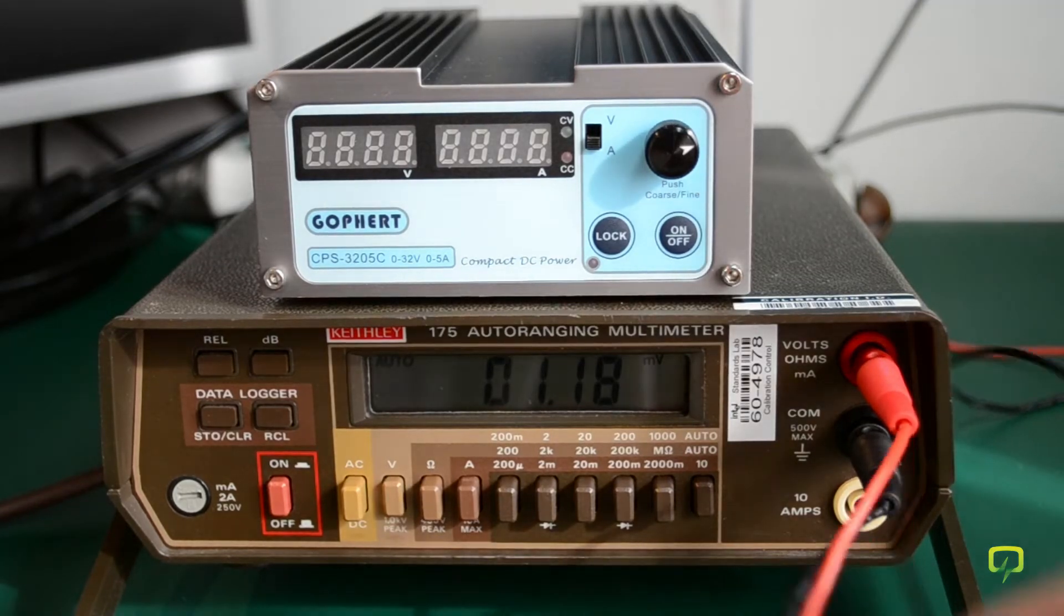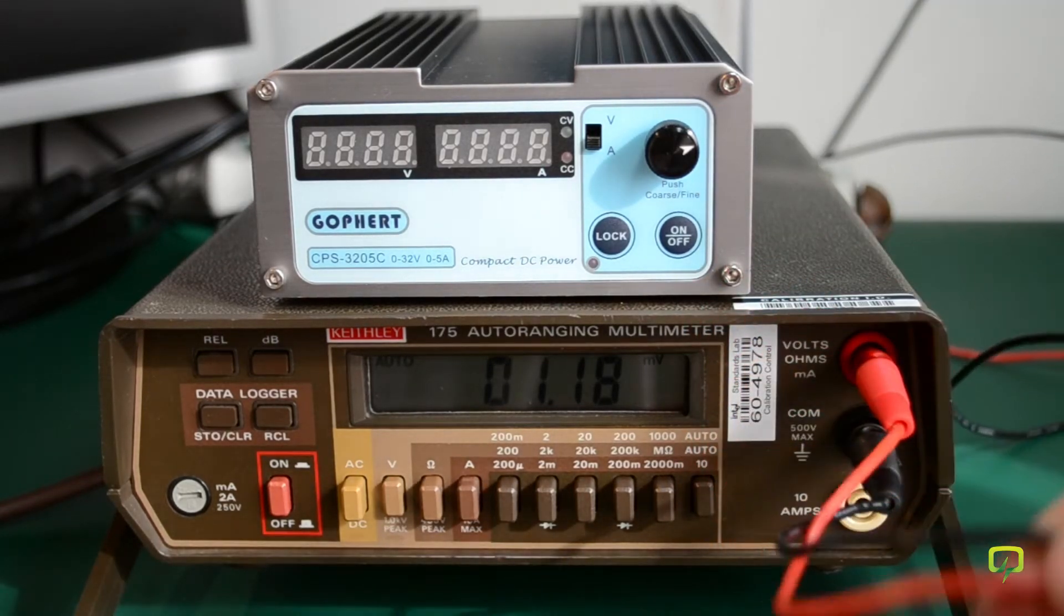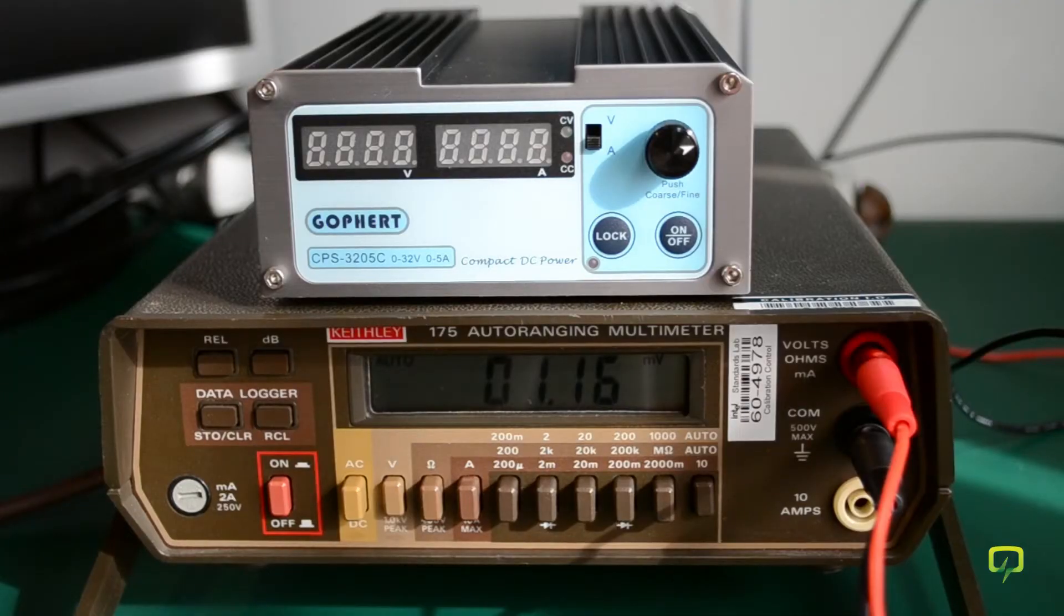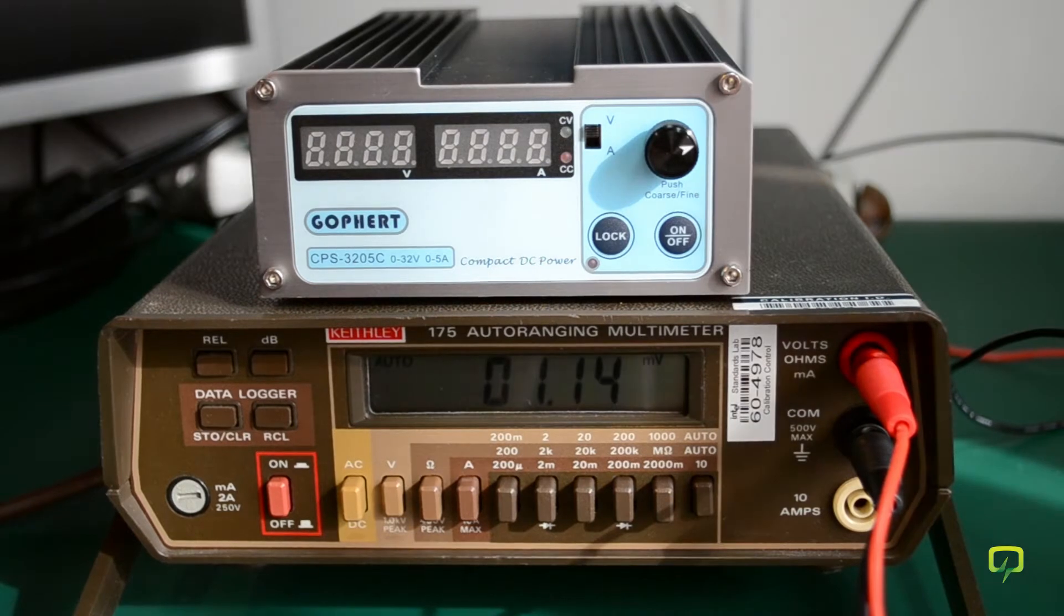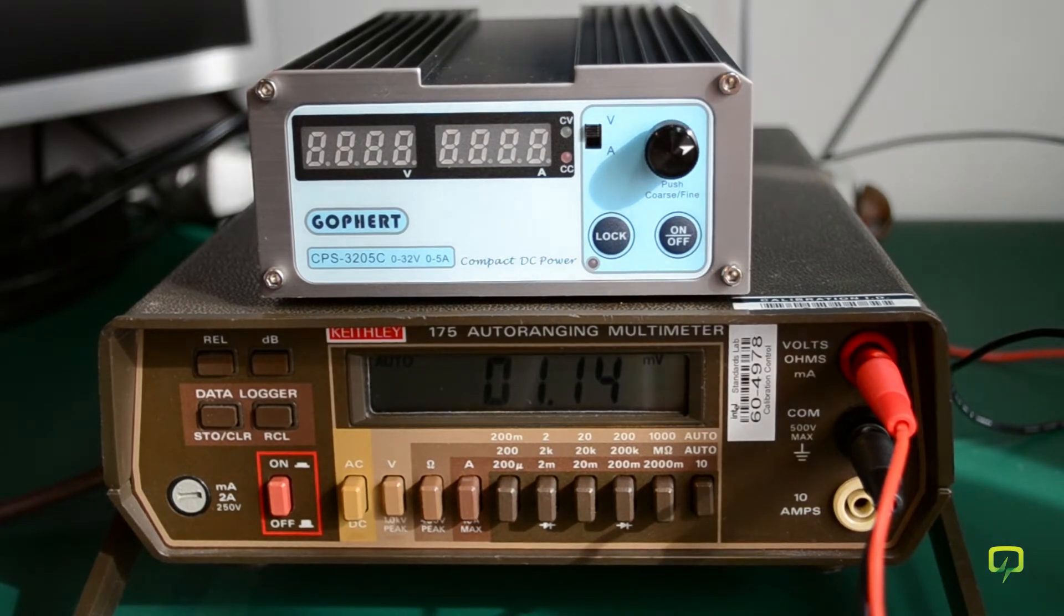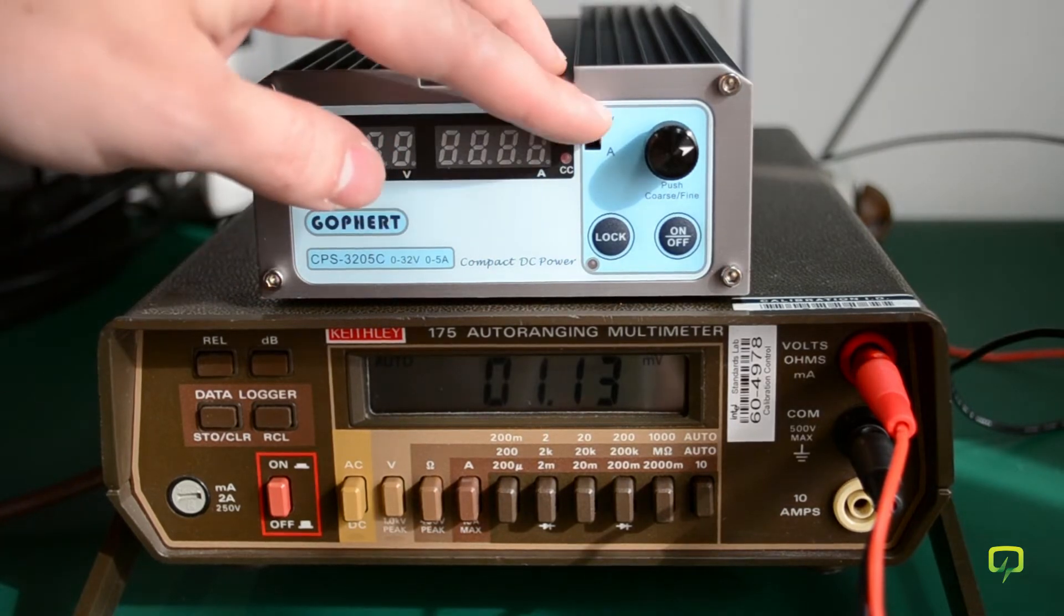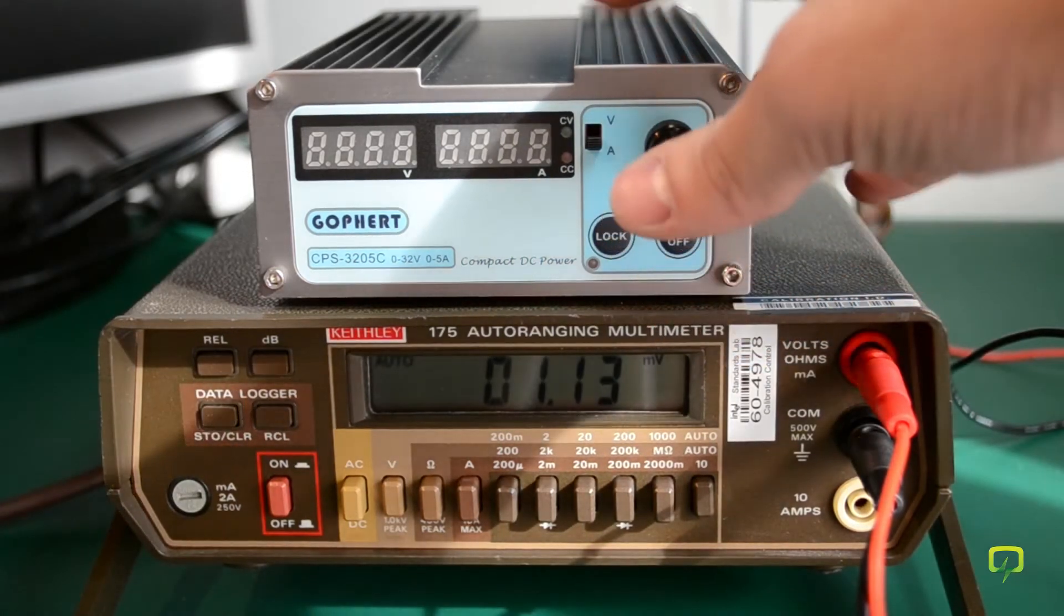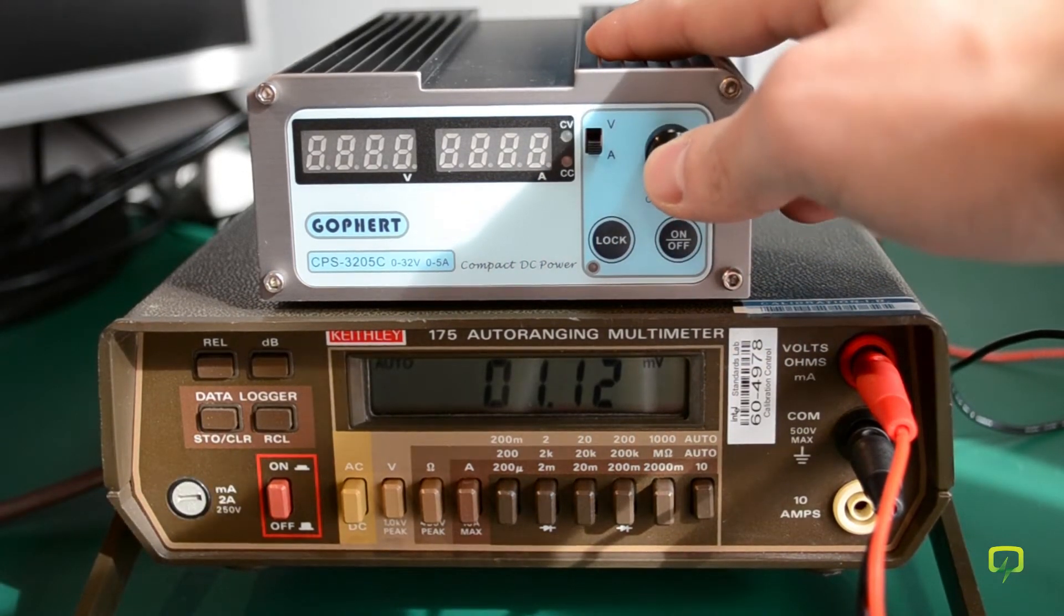So I have my multimeter connected through these leads to the output of the power supply. To enter the calibration, you need to follow this procedure. You set the volts/amps selector switch to the amps position. Then you need to push the adjust knob while turning the power supply on.